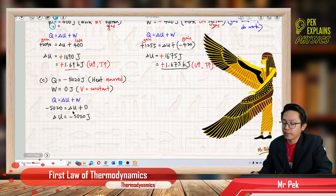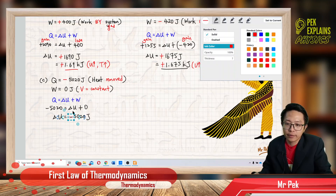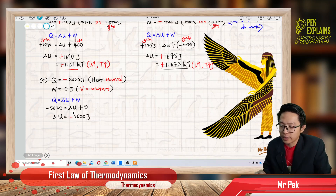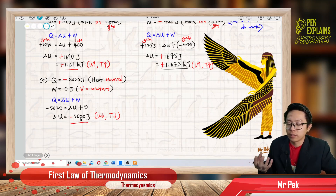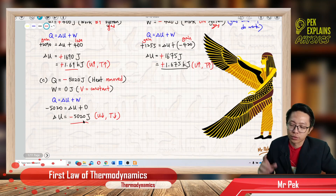So this negative delta U — what does it mean? It means the internal energy decreases and the temperature becomes colder. Why does the internal energy decrease? Because of heat loss. Energy is lost as heat — heat is removed. That's why the internal energy decreases and the temperature of the gas will also decrease; the gas will become colder.